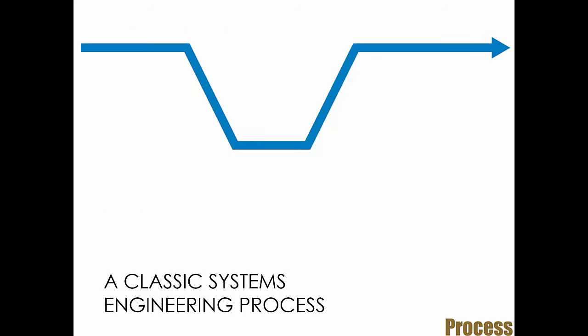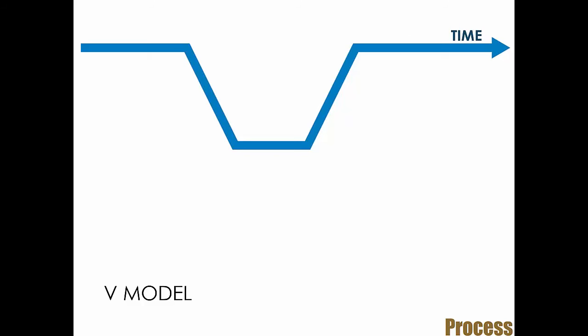So now we talk about how we do systems engineering. There are a few ways that you could do it. Usually they're based on a model, or a process, I should say. So this is a classic systems engineering process. It might not look like one, but it is. And it is called the V model. It might just be named because it looks a bit like a V, or a U, but never mind.